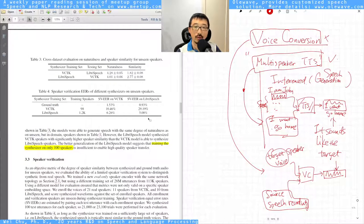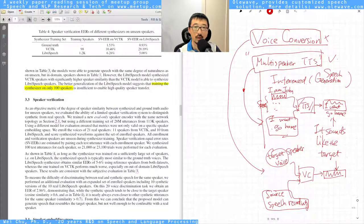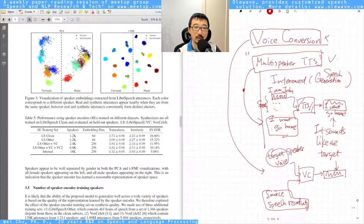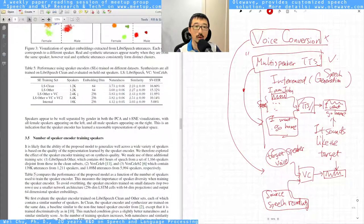They did lots of analysis on this, including speaker verification error rate, and they analyzed the speaker embedding space. They talk about how much data you need to train a good speaker encoder. The conclusion is that you should have more clean speech collected in-house to get better similarity scores.